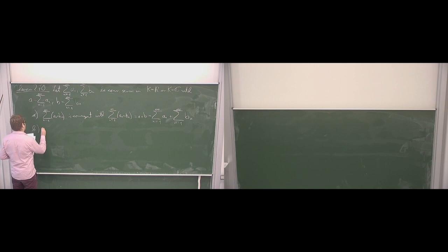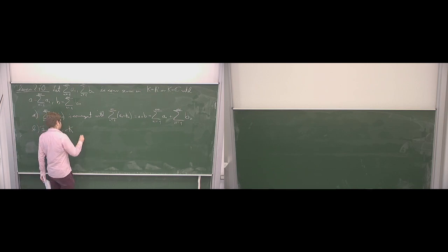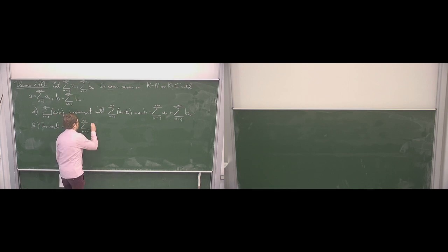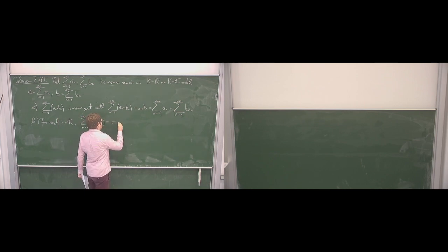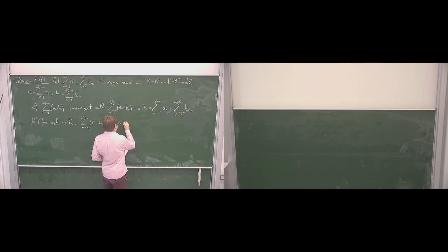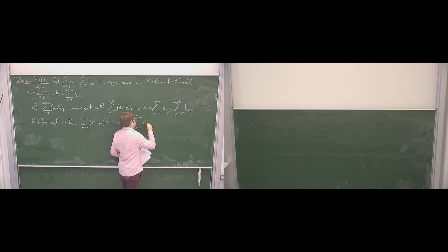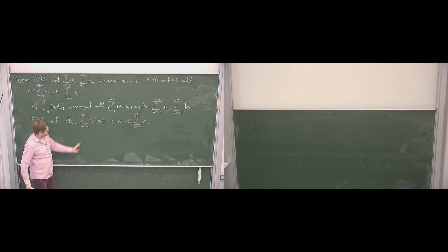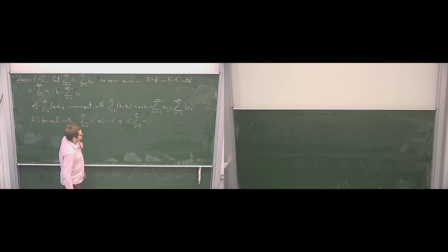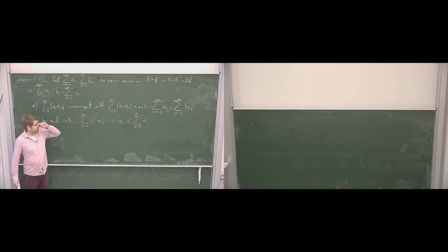Second thing: for each element c in k, we can take the product of the series with this element. Then the sum of c times a_n — so taking the series of this multiplied version — is convergent with limit c times a, which is of course the same as c times the sum from n equal to 1 to infinity of a_n. This convergence follows from applying the theorems for sequences to the partial sums, so it's just simple computation.